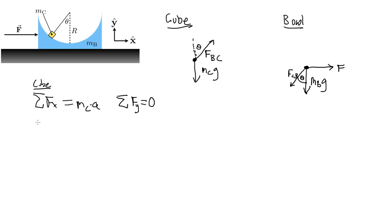This also happens to be true for the bowl, where the sum of the forces in the x direction for the bowl is equal to the mass of the bowl times the same acceleration as in the cube. That's going to give us the link. And then we're going to go ahead and say the sum of the forces for the y direction for that is going to be zero.